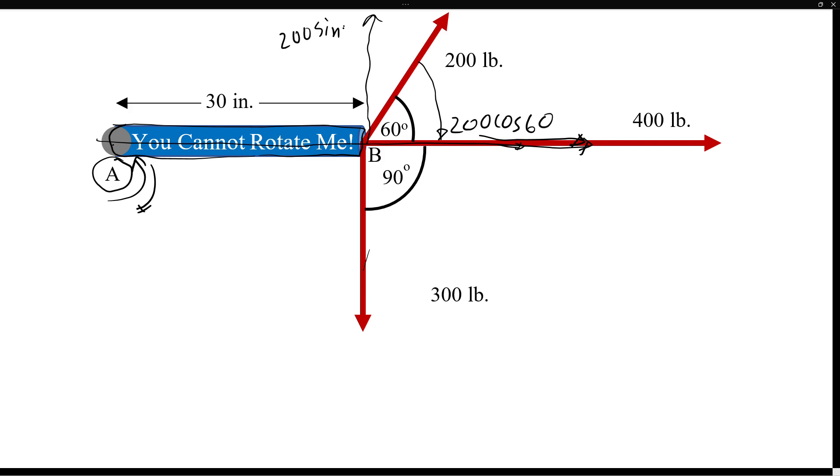If you take moments with respect to point A, counterclockwise positive, for the 400 pound force it is passing through point A so that will not add any moment. So distance is zero. For the 300 it will cause a clockwise moment.